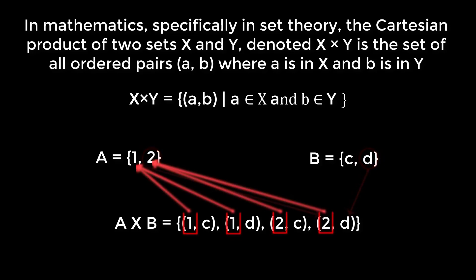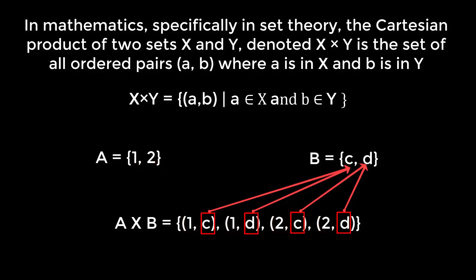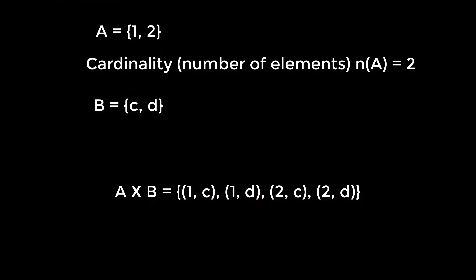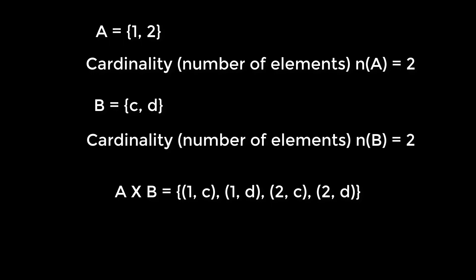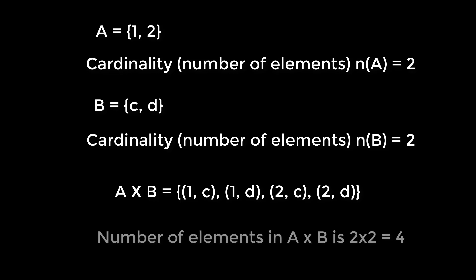Here, 1 and 2 are the elements of set A and they are the first elements of the ordered pairs. C and D are the elements of B and they are the second elements of the ordered pairs. The cardinality of set A is 2 and the cardinality of set B is 2. Therefore, the number of elements in A cross B is 4.